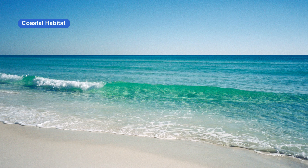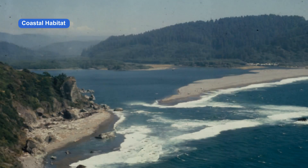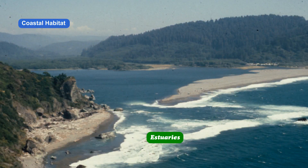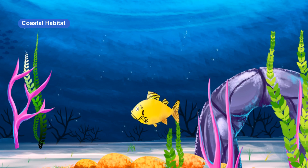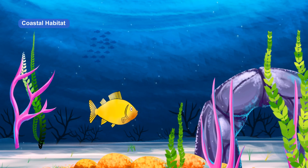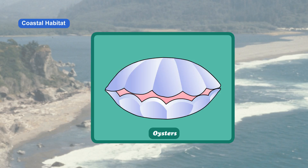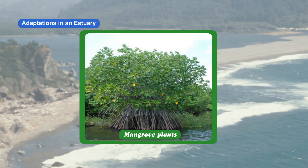Coastal habitat is the region where land meets the sea. Estuaries are places where freshwater mixes with seawater, and many animals and plants make estuaries their habitat. Mangrove plants grow extensively in this region. Crabs and oysters are also found here. Mangroves have roots that are above the ground and have the ability to filter saltwater. Their leaves excrete salt.